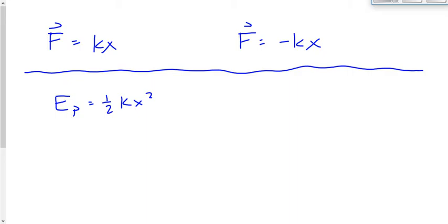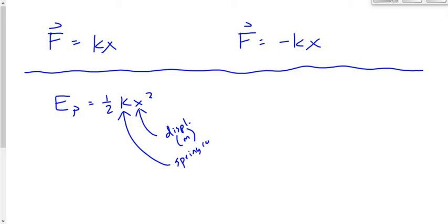Sometimes the question is straightforward — you have the value of x, which is the displacement measured in meters. Not how far it goes across the room, but how much it is stretched or compressed. k is the spring constant or elastic constant, with units of newtons per meter. And Ep is the elastic potential energy, with units of joules.